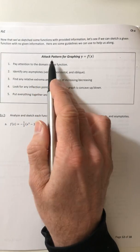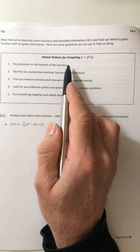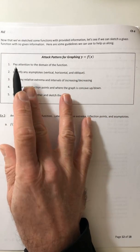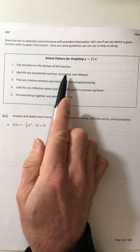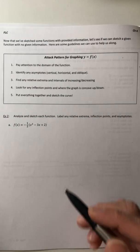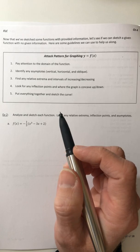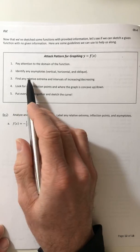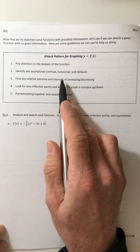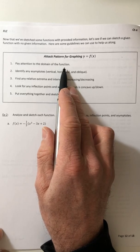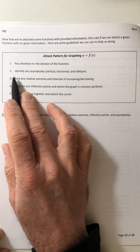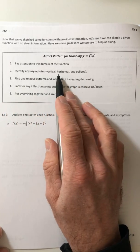So we've got an attack pattern for trying to do these. Number one, pay attention to the domain of the function. Is there anything you can't plug in? Is there a vertical asymptote in there? So that would be number two. Pay attention to the domain, figure out if you have any asymptotes, vertical or horizontal.